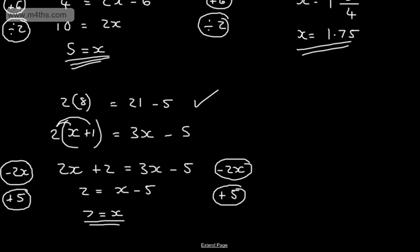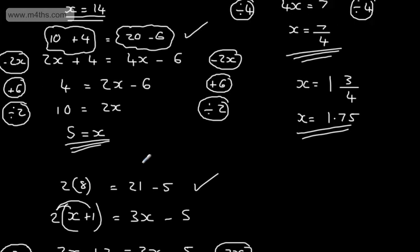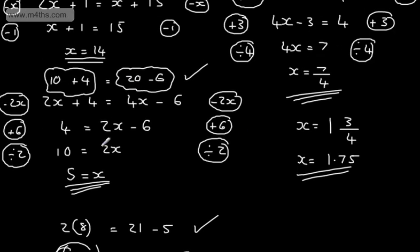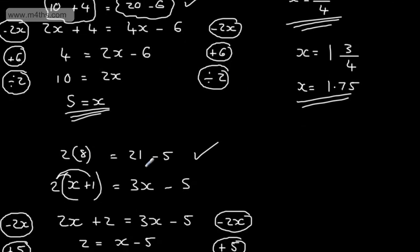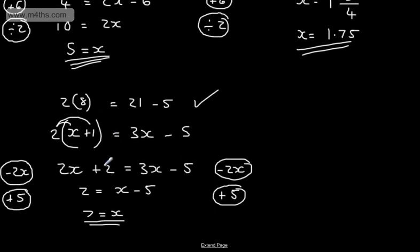So those are some very basic equations, and we've looked at using the method of balancing an equation to solve. There are alternative methods, but when we have an unknown — that's an x or a y — on both sides of the equation, this method is potentially the easiest way to go.